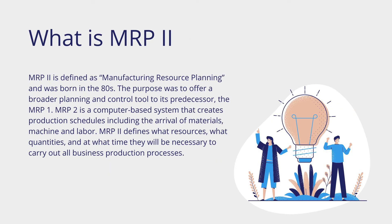What is MRP-2? MRP-2 is defined as Manufacturing Resource Planning and was born in the 80s. The purpose was to offer a broader planning and control tool compared to its predecessor, MRP-1. MRP-2 is a computer-based system that creates production schedules, including the arrival of materials, machine, and labor. MRP-2 defines what resources, what quantities, and at what time they will be necessary to carry out all business production processes.